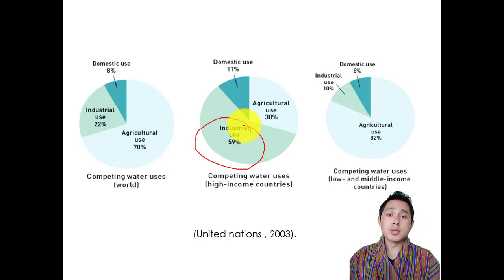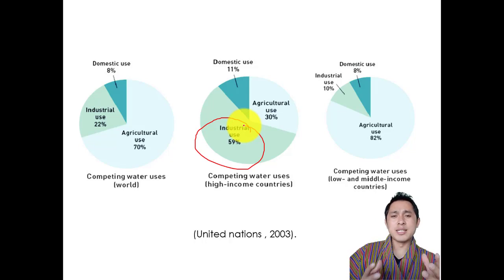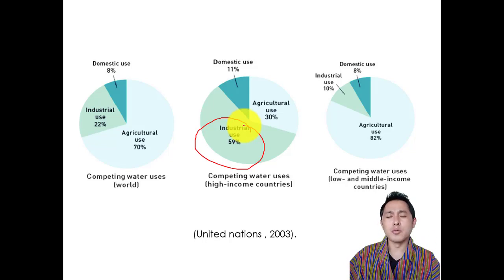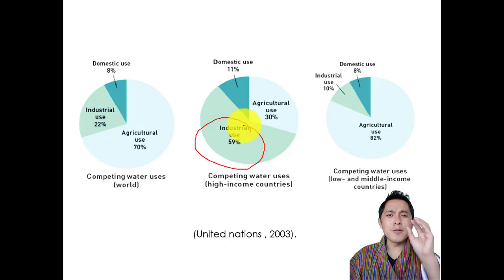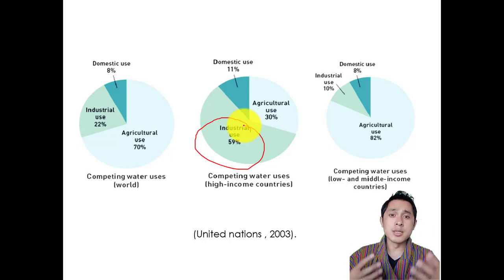Just a single small wafer chip requires around 2,000 gallons of water to produce. One gallon is nearly equal to four liters of water, so to produce this small chip you need around 8,000 liters of water. Those chips require ultra-pure water to wash away all micro-contaminants, dust particles, and dirt so that the semiconductor is very pure in its form.